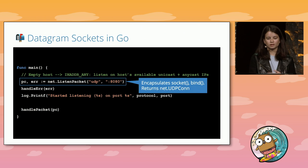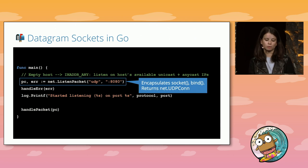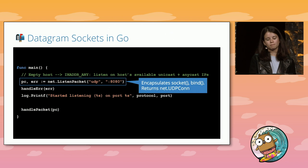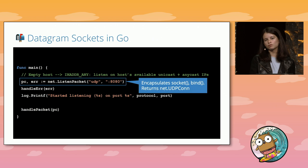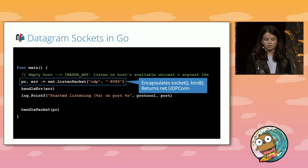Go again abstracts away a lot of these system calls. Instead of using the listen function, we use ListenPacket to open up a datagram socket. Like our streaming socket example, I bind to internet address any on port 8080 to receive all inbound traffic to that port. ListenPacket encapsulates the socket and bind syscalls and returns a net.UDPConn that we use to read from and write to the socket. We then pass the UDP construct into handlePacket.